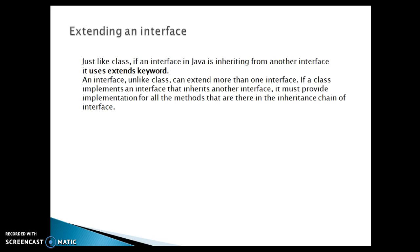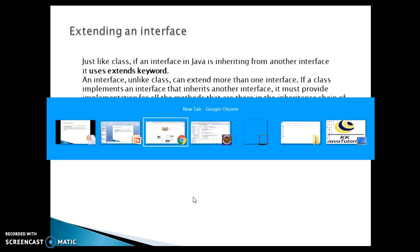First, when one interface extends another interface, or when one interface extends multiple interfaces, then what happens with the implementation class. Just like a class, if an interface in Java is inheriting another interface, it uses the extends keyword. An interface, unlike a class, can extend more than one interface. If a class implements an interface that inherits another interface, it must provide implementation of all the methods that are there in the inheritance chain of the interface.